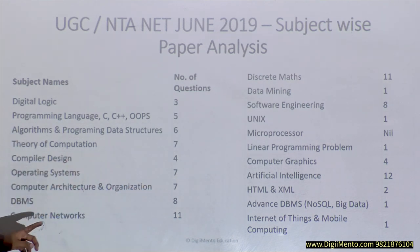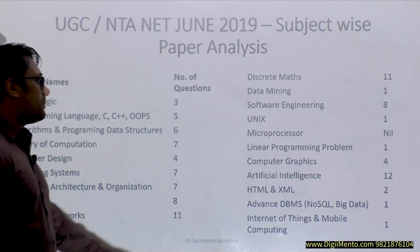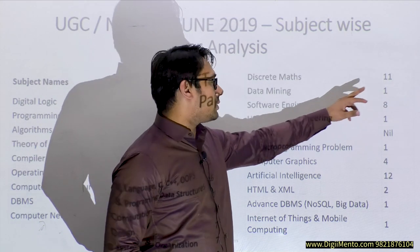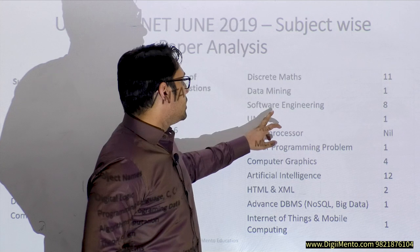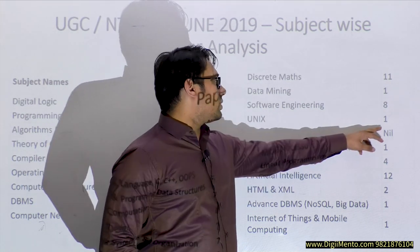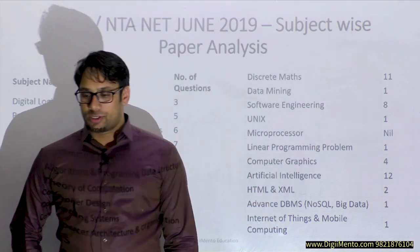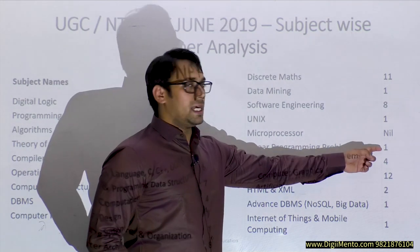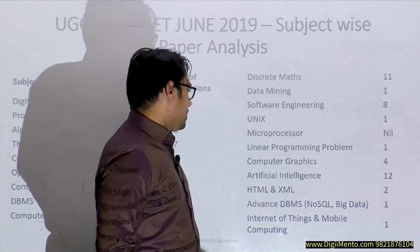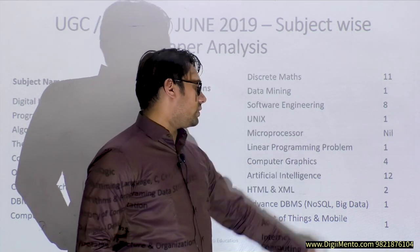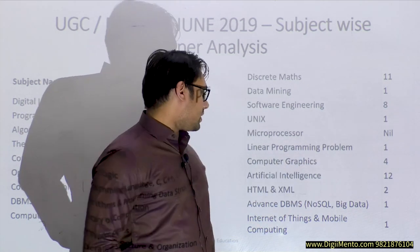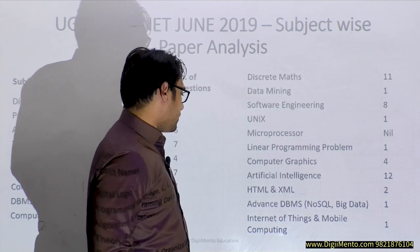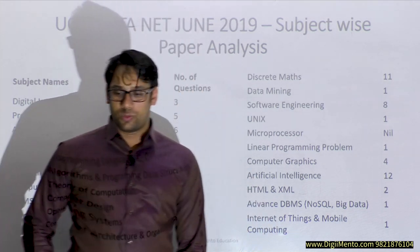Compiler design had 4 questions, operating system 7 questions, computer architecture and organization 7 questions, and DBMS 8 questions. Computer networks had 11 questions, discrete mathematics had 11 questions, data mining had only 1 question, software engineering 8 questions, UNIX 1 question. Microprocessor had no questions asked in June 2019. LPP had 1 question, computer graphics 4 questions, artificial intelligence 12 questions, HTML and XML 2 questions, advanced DBMS including NoSQL and Big Data had 1 question, and IoT and mobile computing had only 1 question.